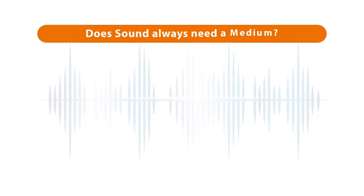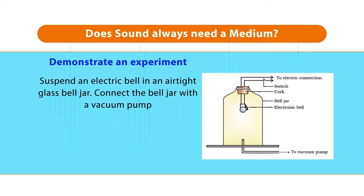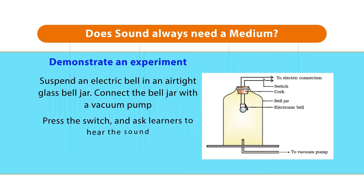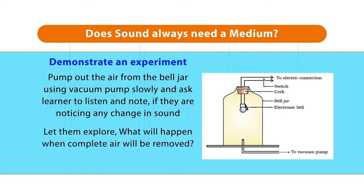There is a very famous experiment in the class nine NCERT textbook which you can demonstrate. Suspend an electric bell inside an airtight glass bell jar and connect it with a vacuum pump. First press the switch and ask learners to hear the sound — they will hear the bell. Then start pumping out the air slowly from the bell jar and ask learners to listen and note any change. They will tell you the sound is getting diminished. When all the air is removed, ask them if they can still hear the sound. They will say no. So every sound needs a medium.